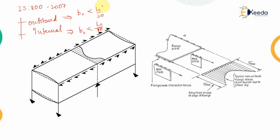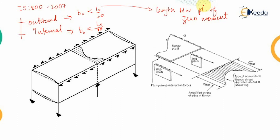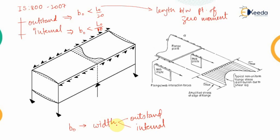Here, L0 is the length between points of zero moment — that is, the points of contraflexure where the moment is minimum and the shear force is maximum. The distance between those points gives us L0. B0 is the actual width — for outstand elements it is the width of the outstand element, and for internal elements it is the corresponding width. This completes the discussion regarding the shear lag effect.